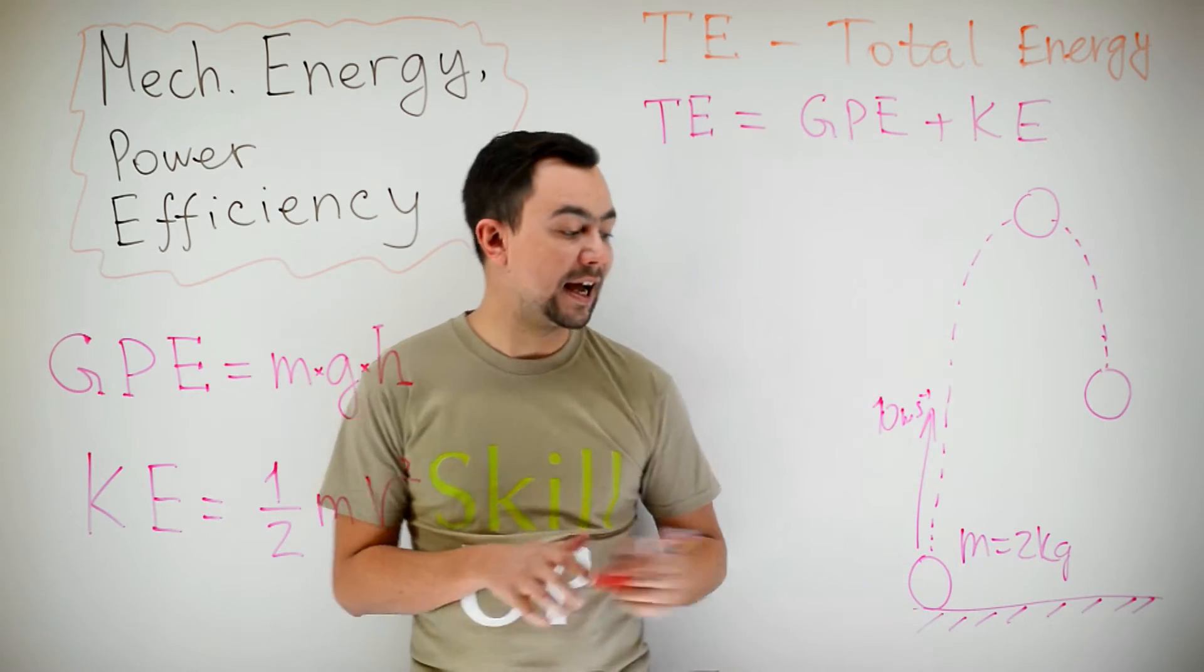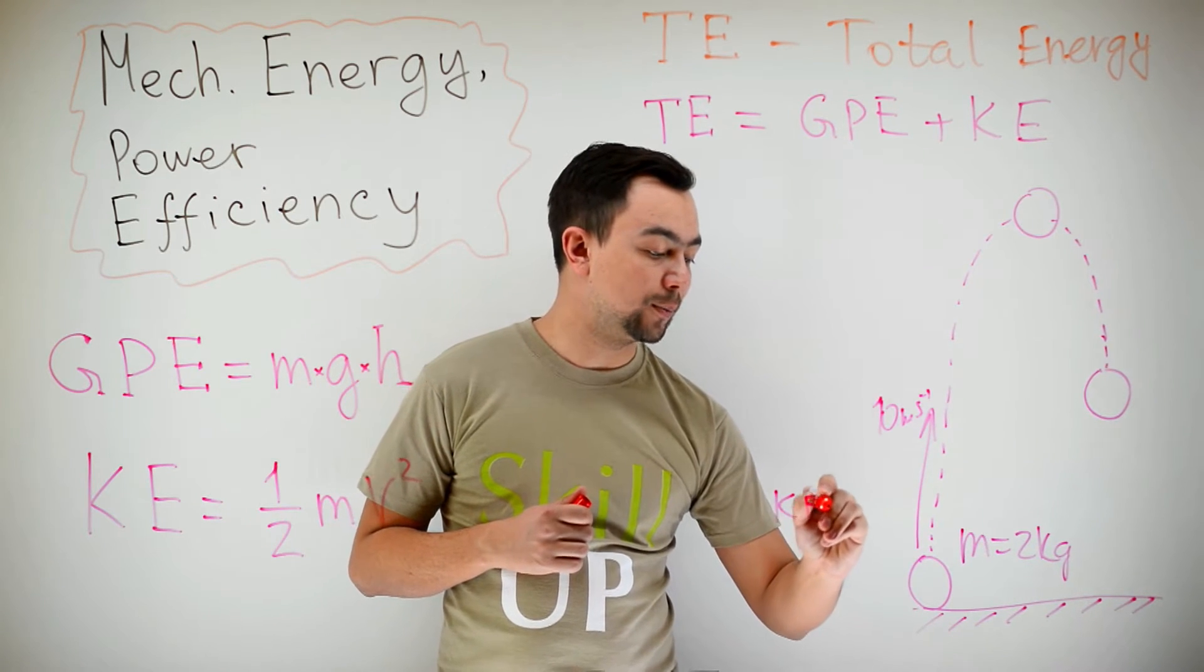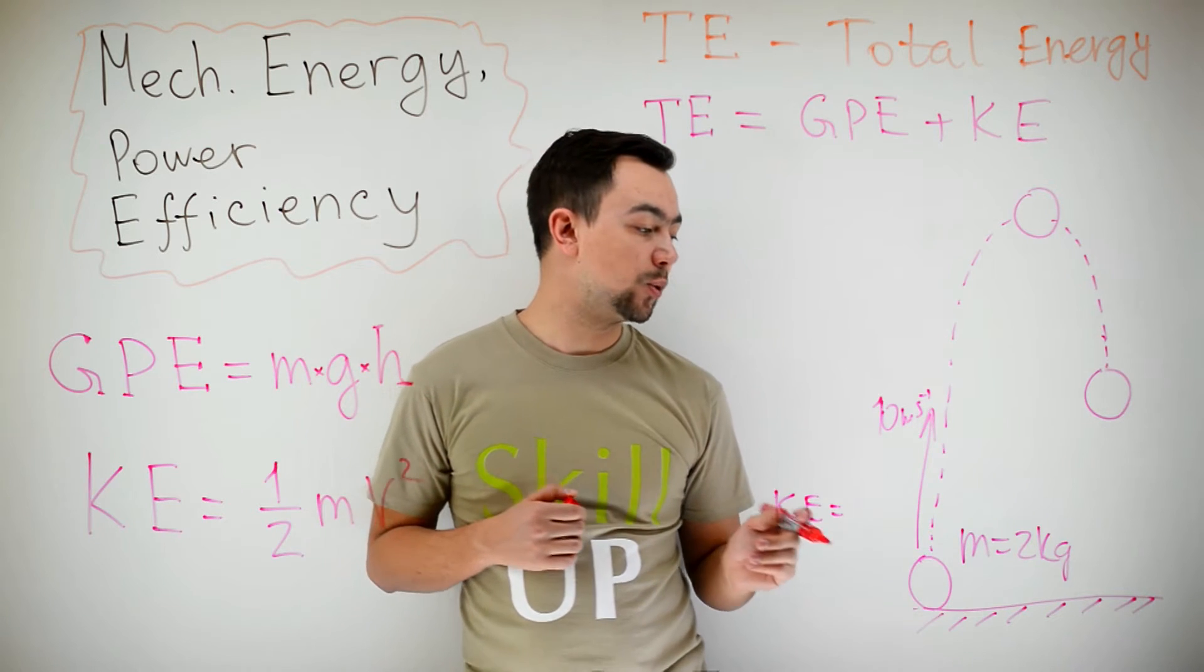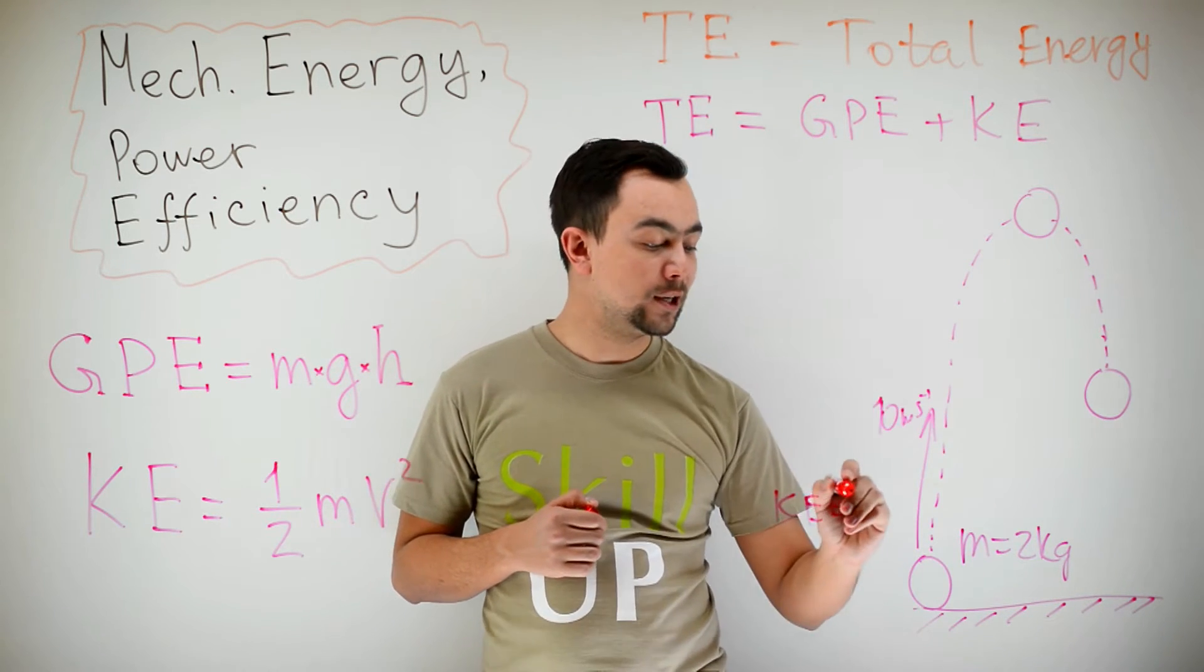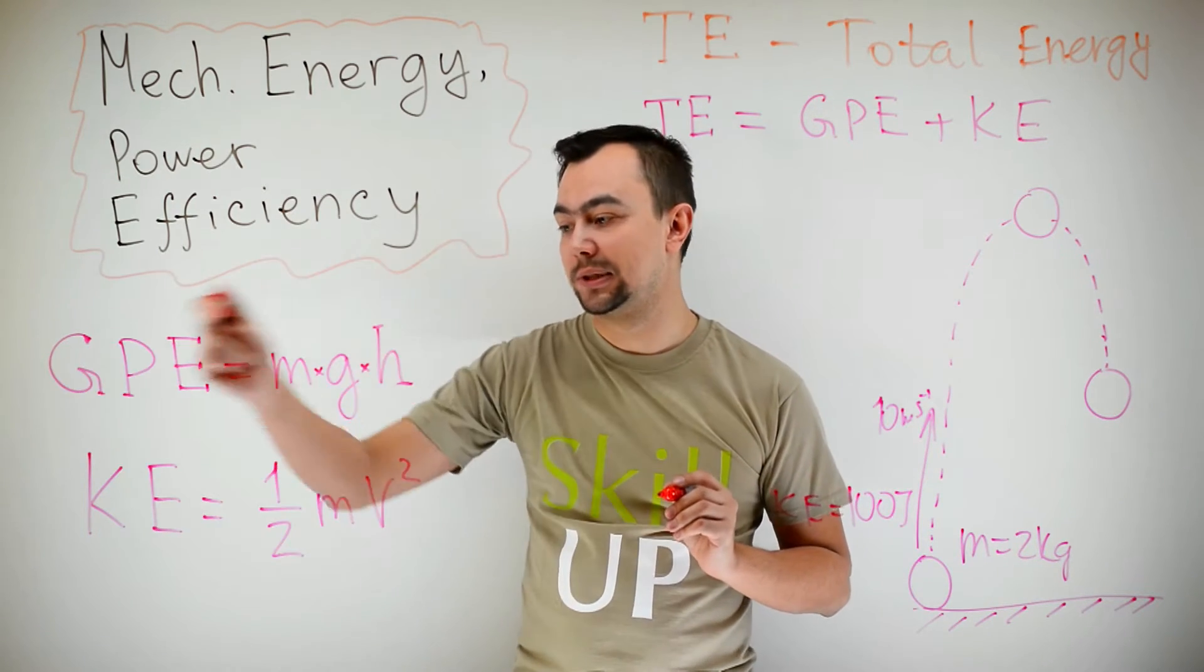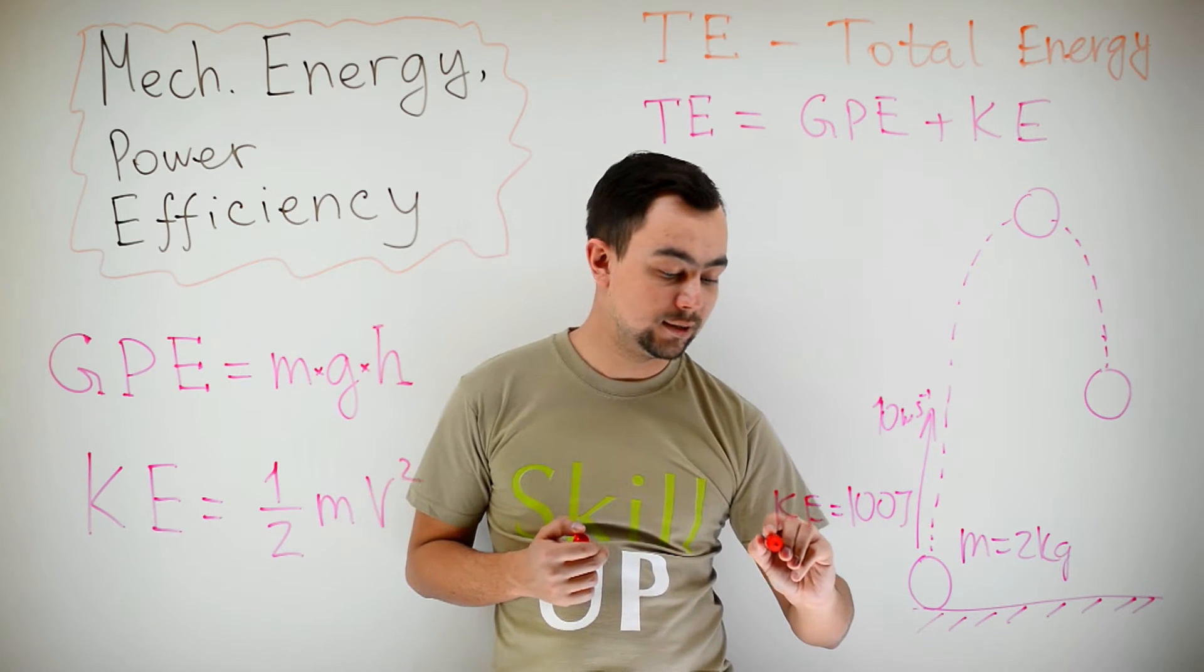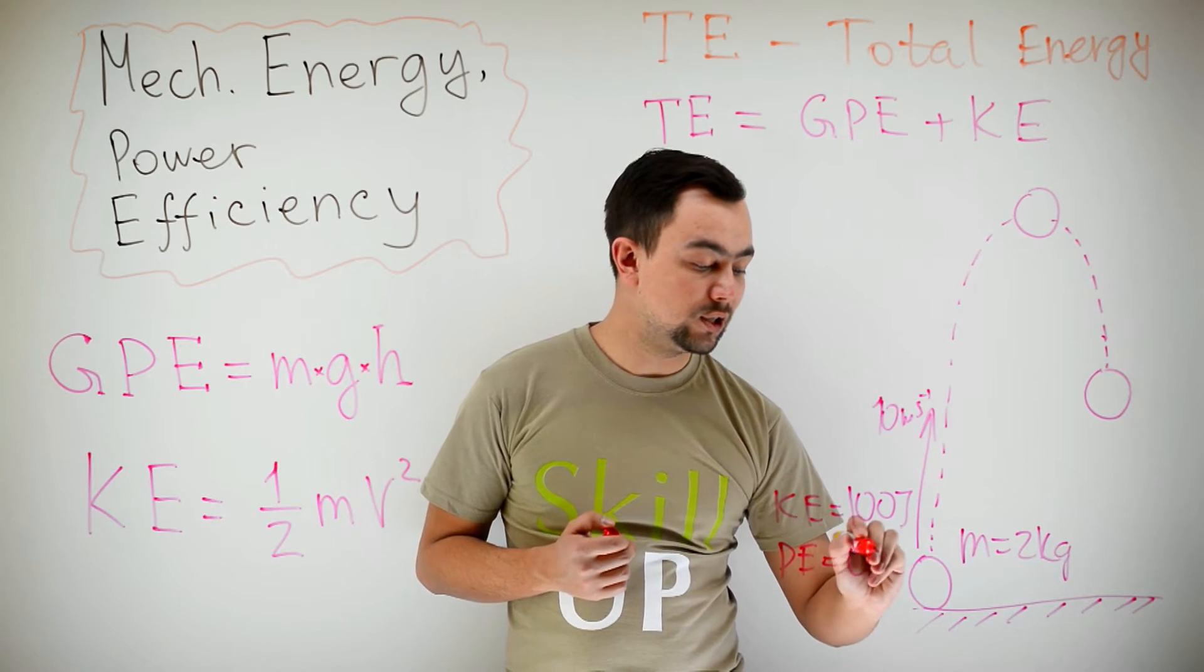Well, imagine you're throwing a ball of mass 2 kilograms with a velocity of 10 meters per second. At first, it has kinetic energy. Kinetic energy of the ball is equal to 1 half mv squared. So it's 1 half multiplied by 2 multiplied by 10 squared, which gives you 100 joules. The gravitational potential energy, since the ball is near the ground, is 0. So, potential energy is 0 joules.